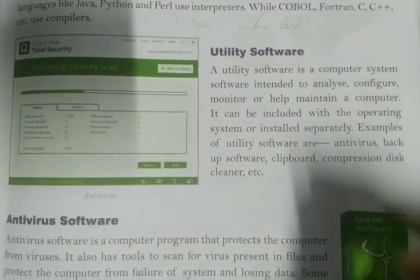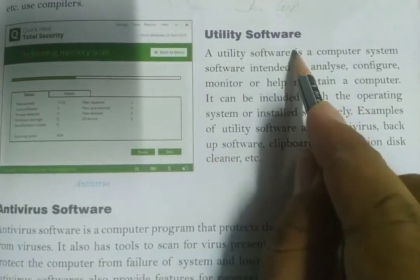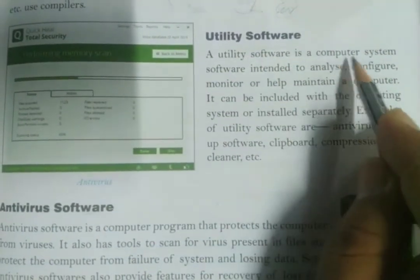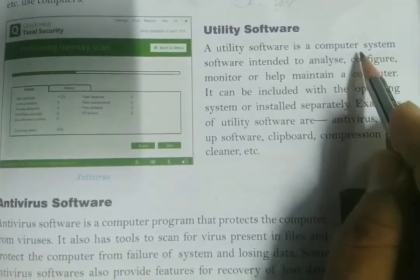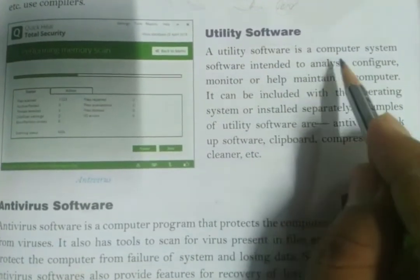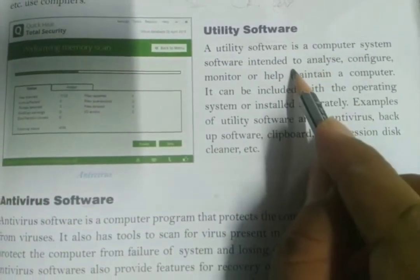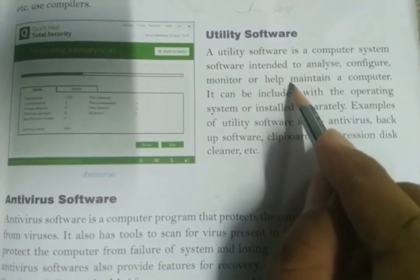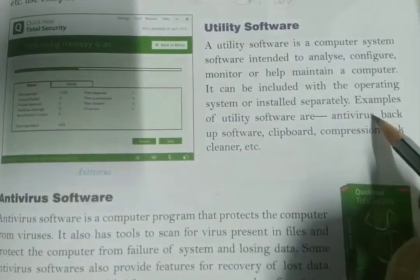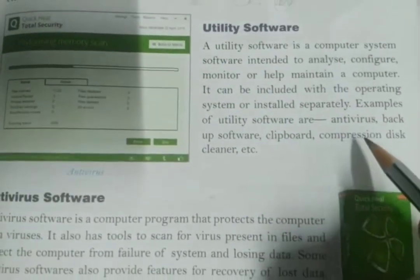Now let us talk about the third part of system software: utility software. These are also called housekeeping software because they are used to manage or configure your computer. Examples include backup software, antivirus software, and file compression software.